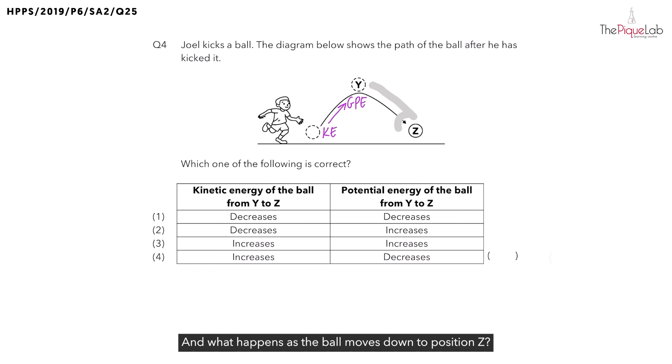And what happens as the ball moves down to position Z? Is the ball's height above the ground increasing or decreasing? The ball's height above the ground is decreasing. So what happens to the amount of GPE possessed by the ball? The amount of GPE possessed by the ball is also decreasing.